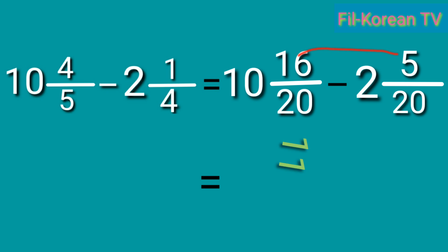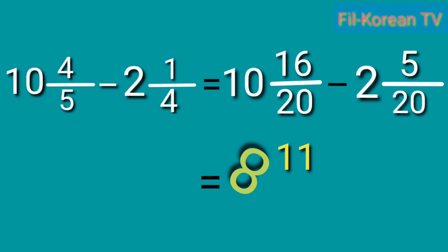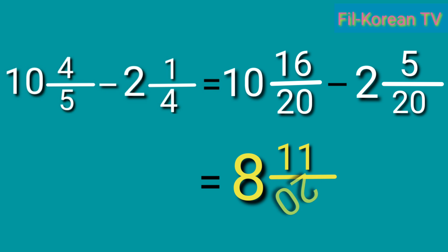16 minus 5 equals 11. 10 minus 2 equals 8. Then, copy the LCD: 20. The answer is 8 and 11 twentieths. It is already in the lowest term.